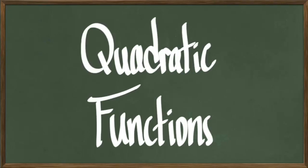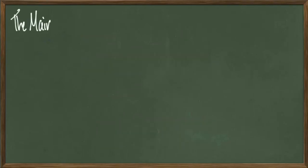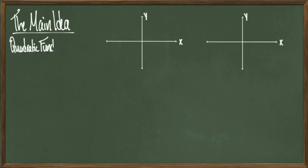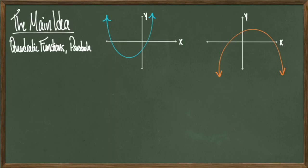Hey everyone, today we're going to be talking about quadratic functions. We'll start off with some main ideas. Quadratic functions, also called parabolas, look this way on a graph. They look like these open U's that go up or down forever. These are pretty much the only two shapes that you can get with a parabola.